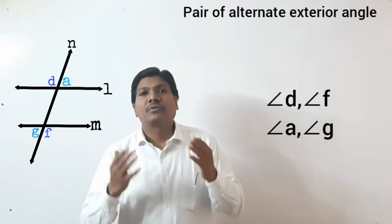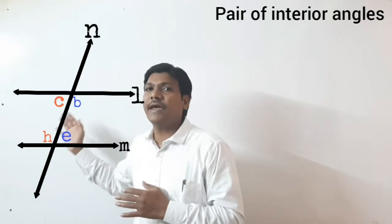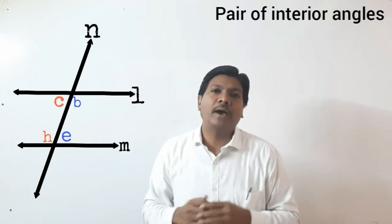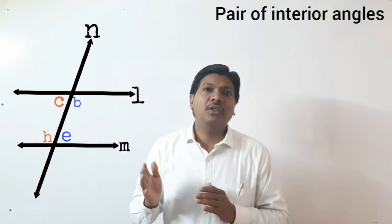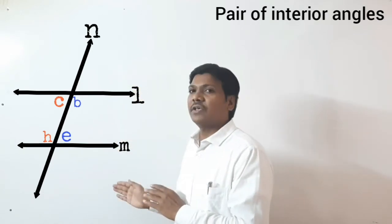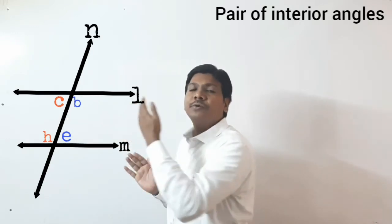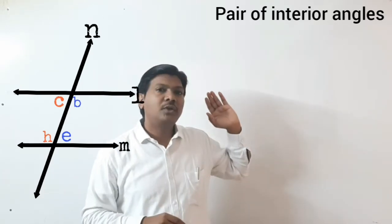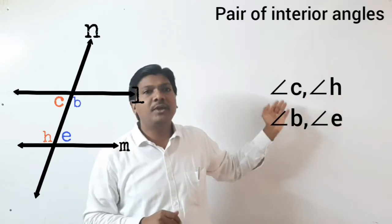Then the next topic is pairs of interior angles on the same side of the transversal. Interior means the angle between two lines — the angle between two parallel lines is called the interior angle. So pairs of interior angles on the same side of the transversal: line L is the transversal, and on one side there is angle C and angle A. The interior angle pairs are angle C, angle Y, angle B, and angle A.